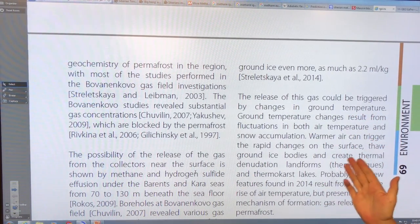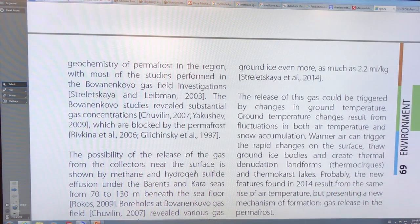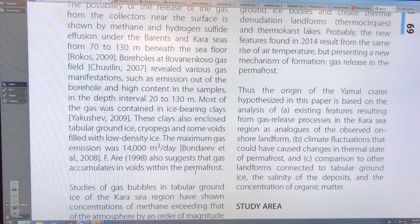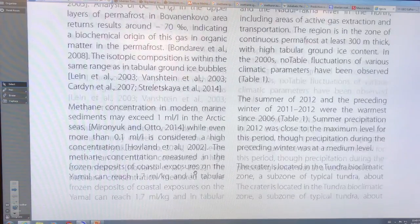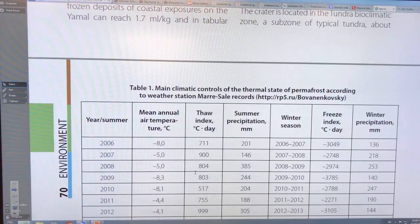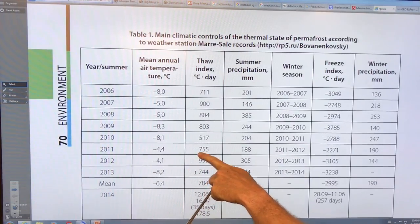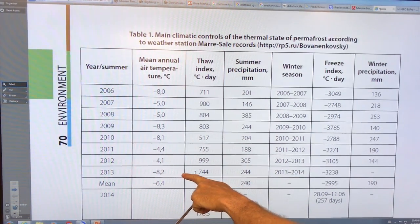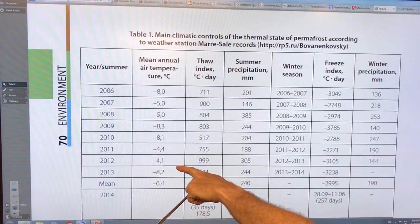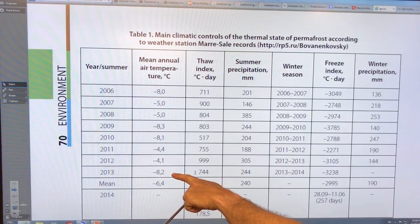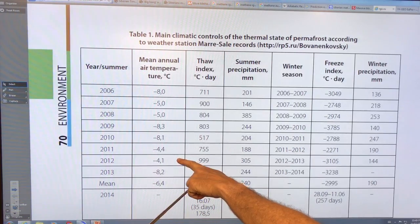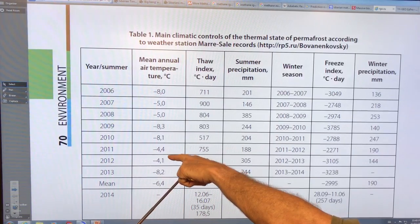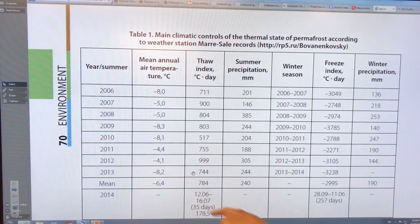Warmer air triggers the rapid changes, thawing the ice and so on. So they tried to look at the origins of this. These are some of the climate conditions in this region, mean average temperatures and stuff. It was 2013 when it happened. It was quite warm in 2014, in 2012. In 2011, it was quite warm, two very warm years, still below zero mean annual temperatures. And then thaw indexes were high. And then boom, we got these craters.